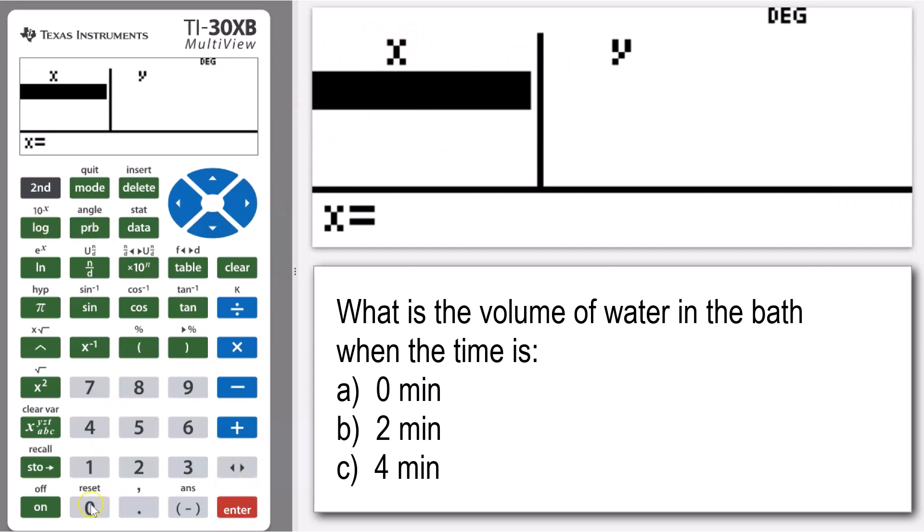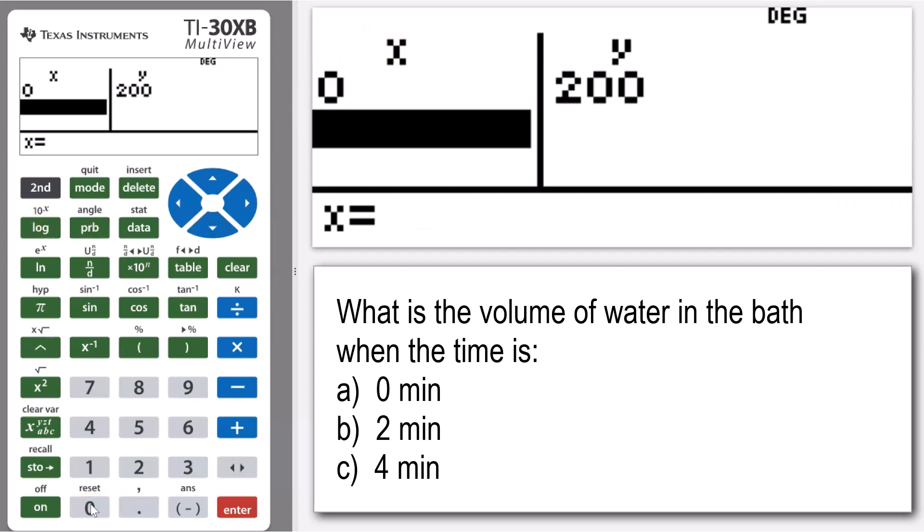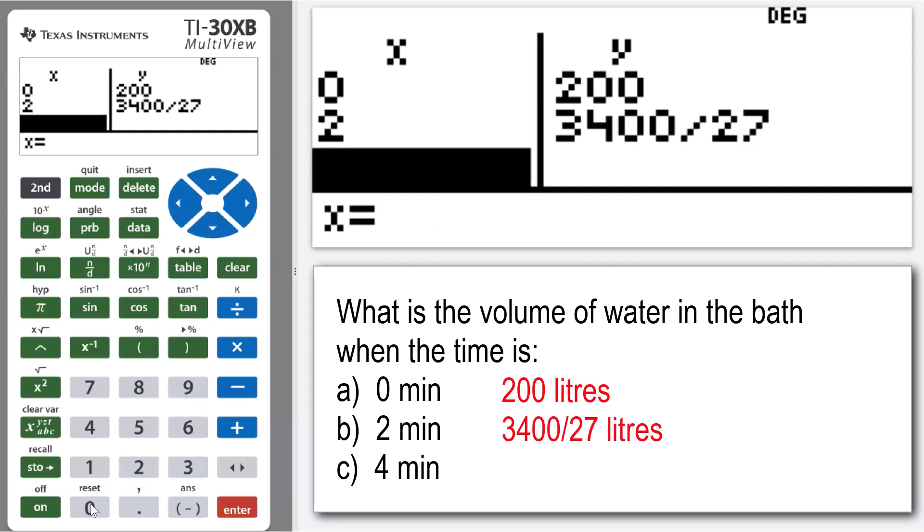All right, so my first one was when my time is zero, so I'm going to input zero, and then we can see volume is 200. My second one, when my time is two minutes, and there I can see that 3400 over 27. And the last one is when X is four minutes, and there I can see that one, 1400 over 27.